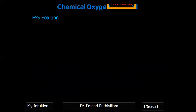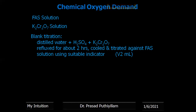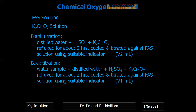We need to prepare a ferrous ammonium sulfate standard solution and calculate its normality; its equivalent weight is 392.13. We also prepare a standard potassium dichromate solution and calculate its normality; its equivalent weight is 49. There are two titrations: a blank titration and a back titration.